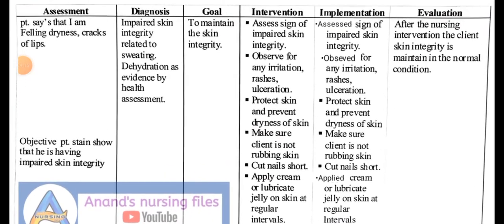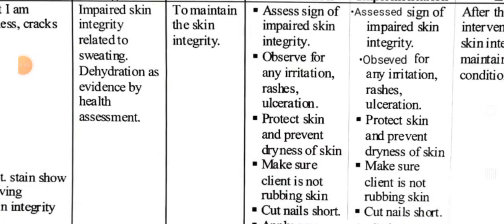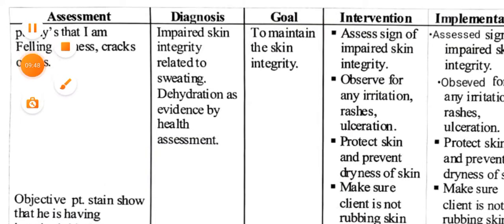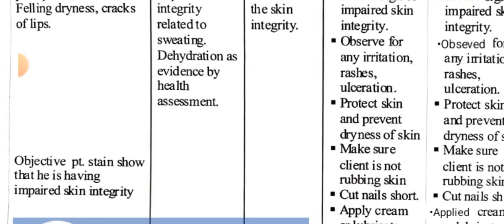Next, nursing diagnosis number three: Impaired skin integrity related to sweating and dryness, as evidenced by health assessment. The patient's skin integrity is impaired, evidenced by sweating, dryness, and dehydration. Nursing assessment — subjective data: patient says 'I am feeling dryness and cracking of lips.' Objective data: on assessment, the patient is found to have impaired skin integrity.